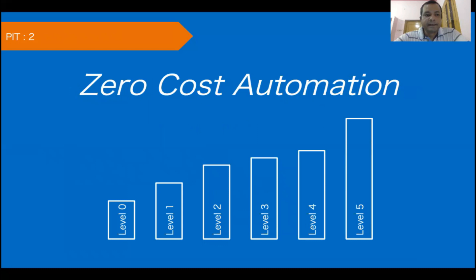PIT 2 focuses on improving productivity and efficiency through cycle time improvement by zero-cost automation. Following a structured approach of Level 0 and Level 1 activities, you can optimize processes at zero cost and achieve up to 50% reduction in cost or 50% improvement in cycle time.